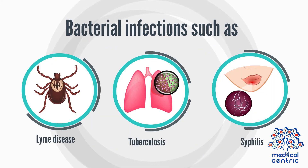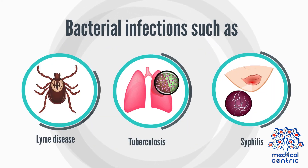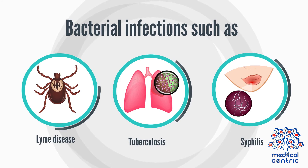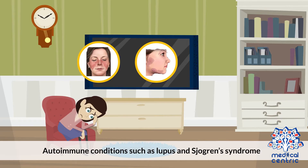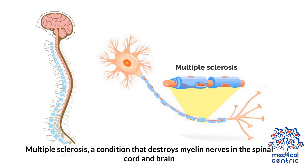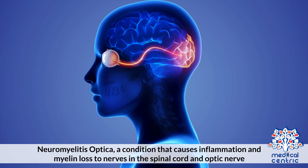Bacterial infections such as Lyme disease, tuberculosis, and syphilis. Autoimmune conditions such as lupus and Sjogren's syndrome. Multiple sclerosis, a condition that destroys myelin nerves in the spinal cord and brain. Neuromyelitis optica, a condition that causes inflammation and myelin loss to nerves in the spinal cord and optic nerve.